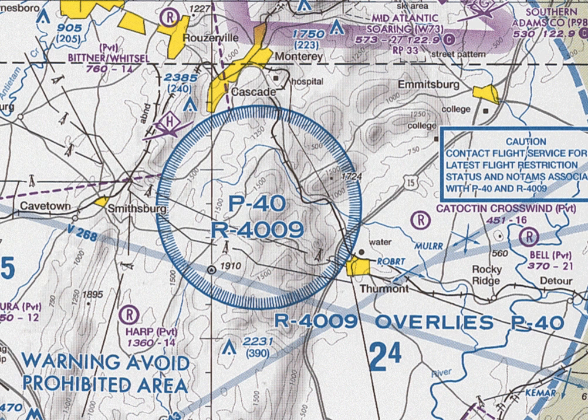Some prohibited airspace may be supplemented via NOTAMs. For example, Prohibited Area 40 and Restricted Area 4009 often have additional restricted airspace added via NOTAM when the President of the United States visits Camp David in Maryland, while normally the airspace outside of P-40 and R-4009 is not prohibited or restricted.